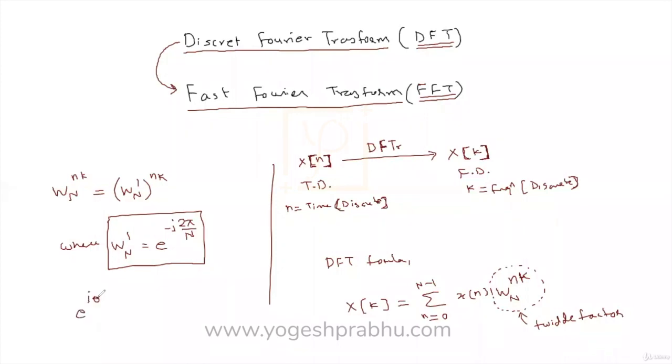And also, I hope you know this already, that E raise to I theta or E raise to J theta, J and I is basically the same thing. It's the iota of a complex number. This is basically a complex number. And then very famous Euler's relation says, it is cos theta plus I sine theta.